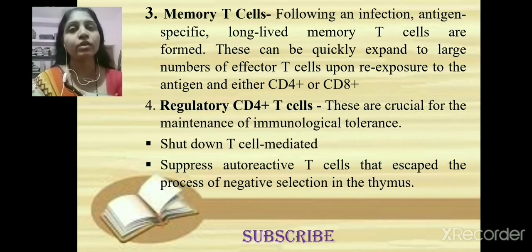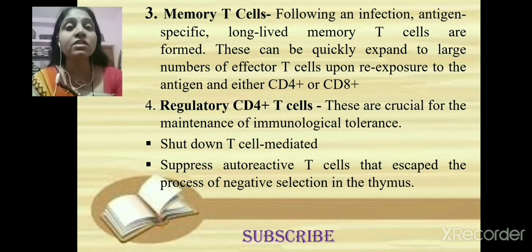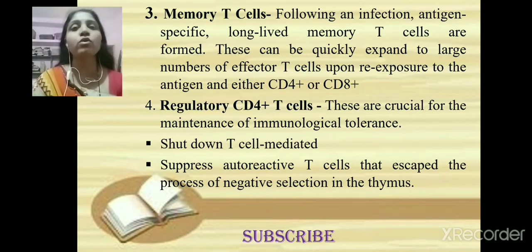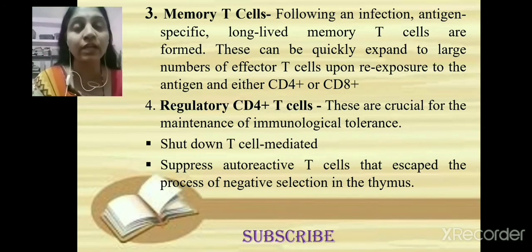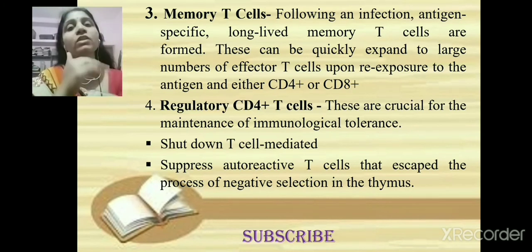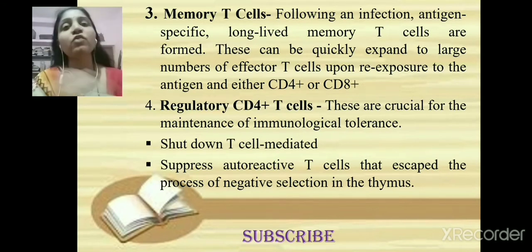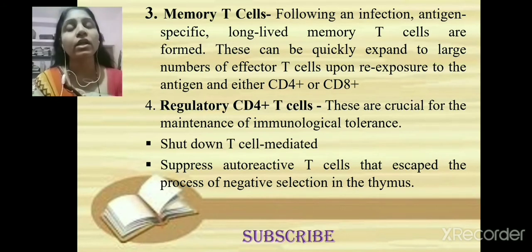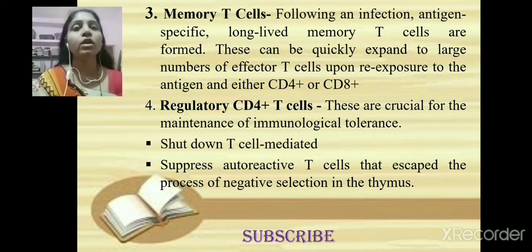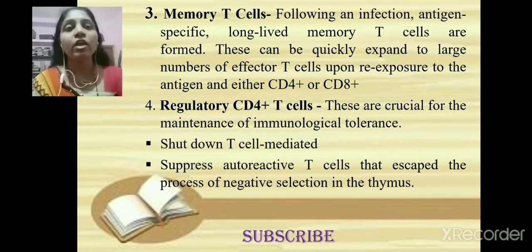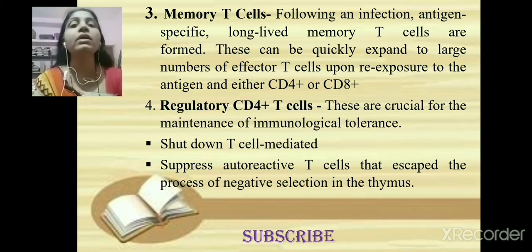Memory T cells have the same function as memory cells formed after B lymphocyte activation — they are responsible for developing the secondary immune response. Following an infection, antigen-specific long-lived memory T cells are formed. After activation of T helper cells, they differentiate into both memory T cells and effector T cells. These memory T cells can quickly expand to a large number of effector T cells upon re-exposure to the same antigen, and they can be either CD4 or CD8 positive.